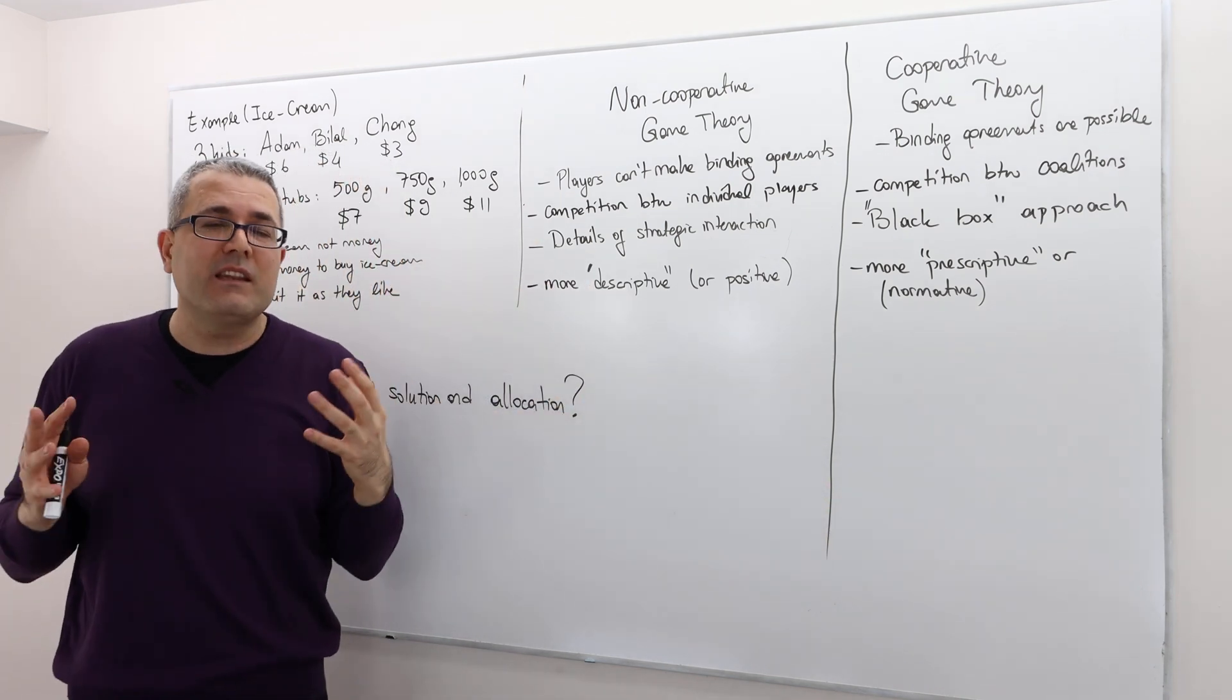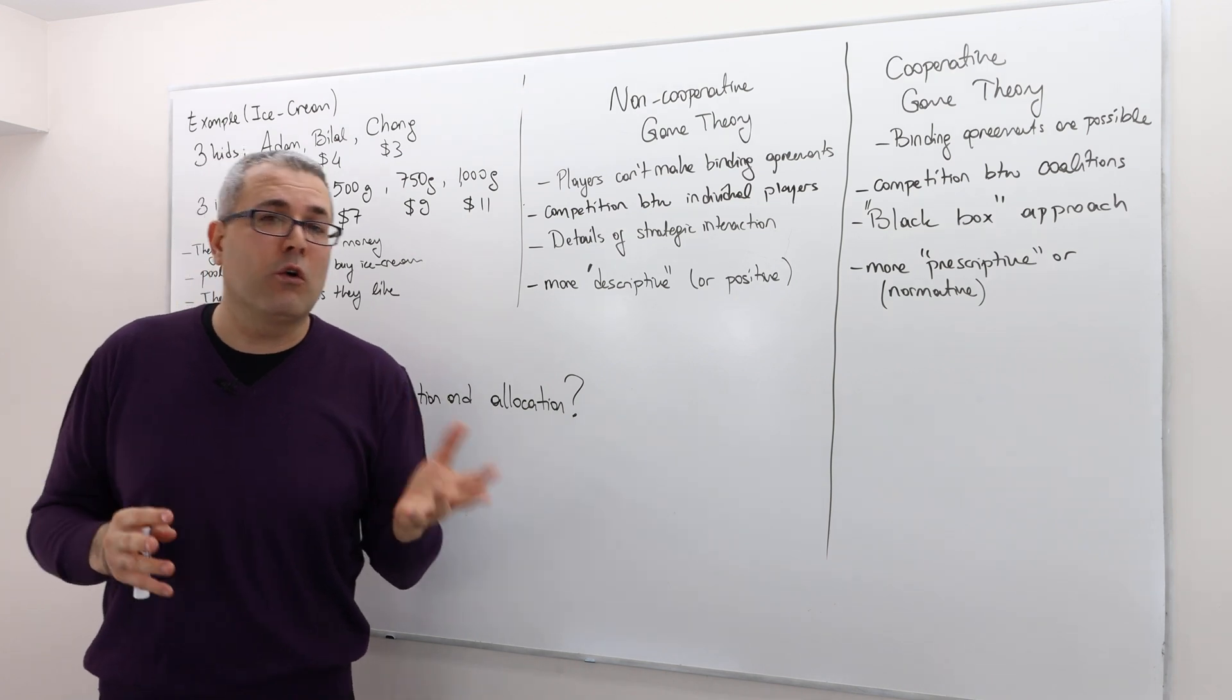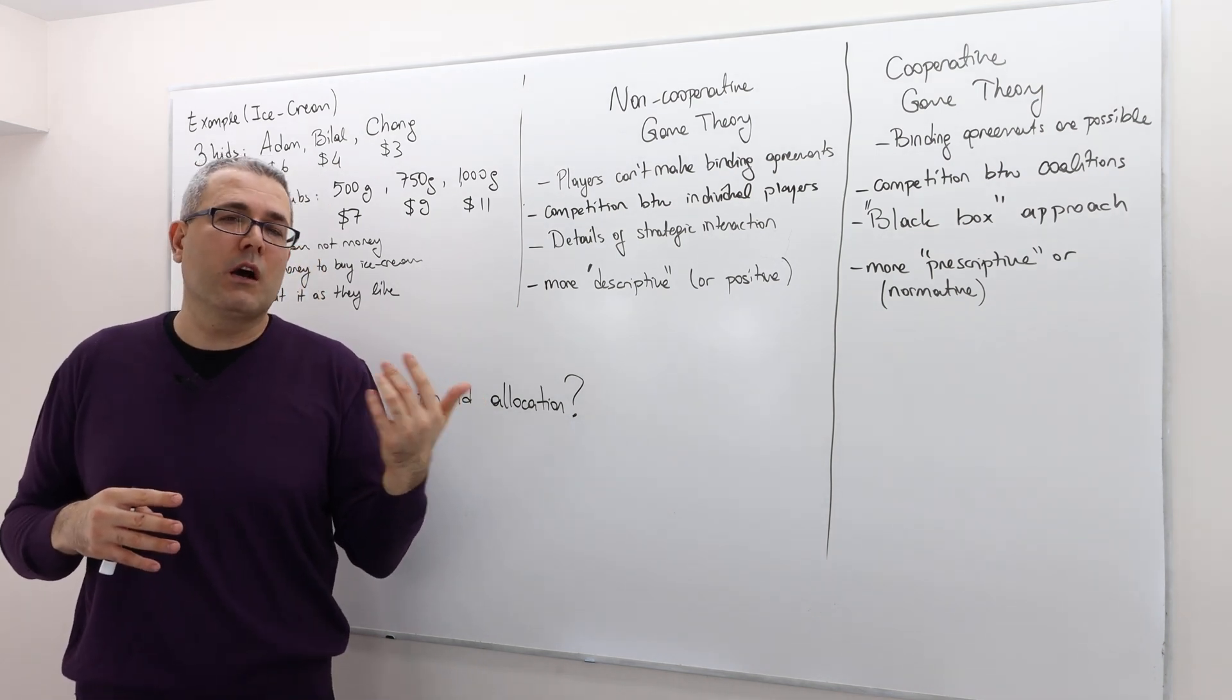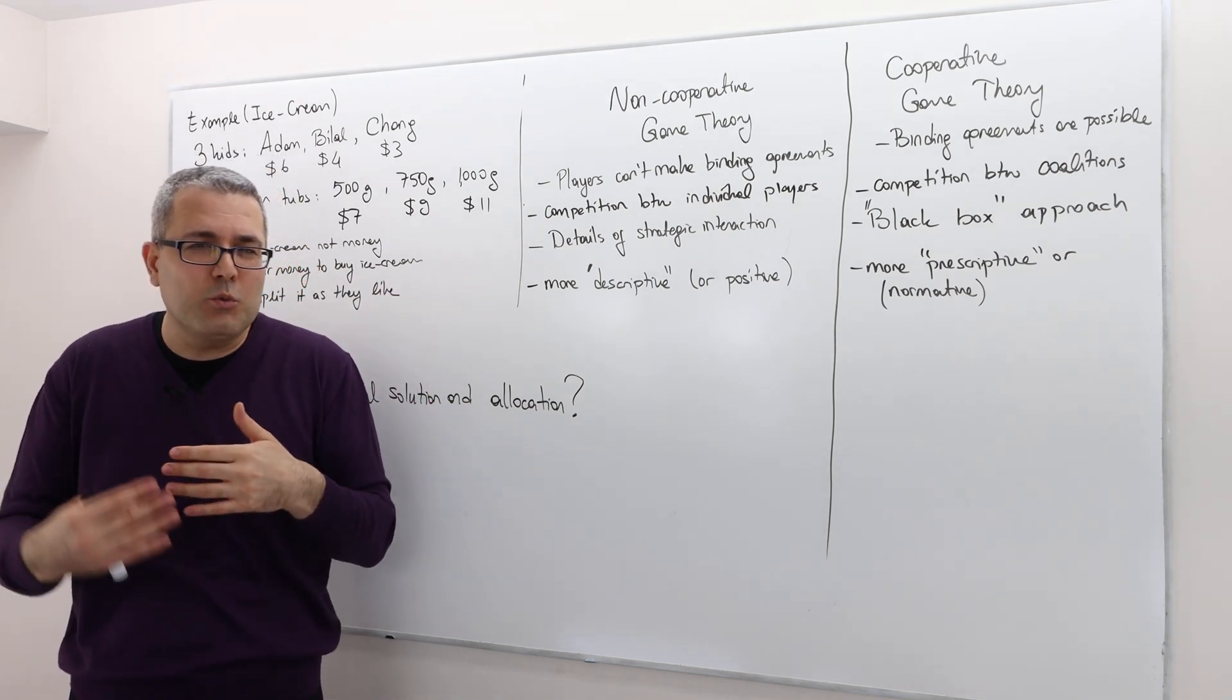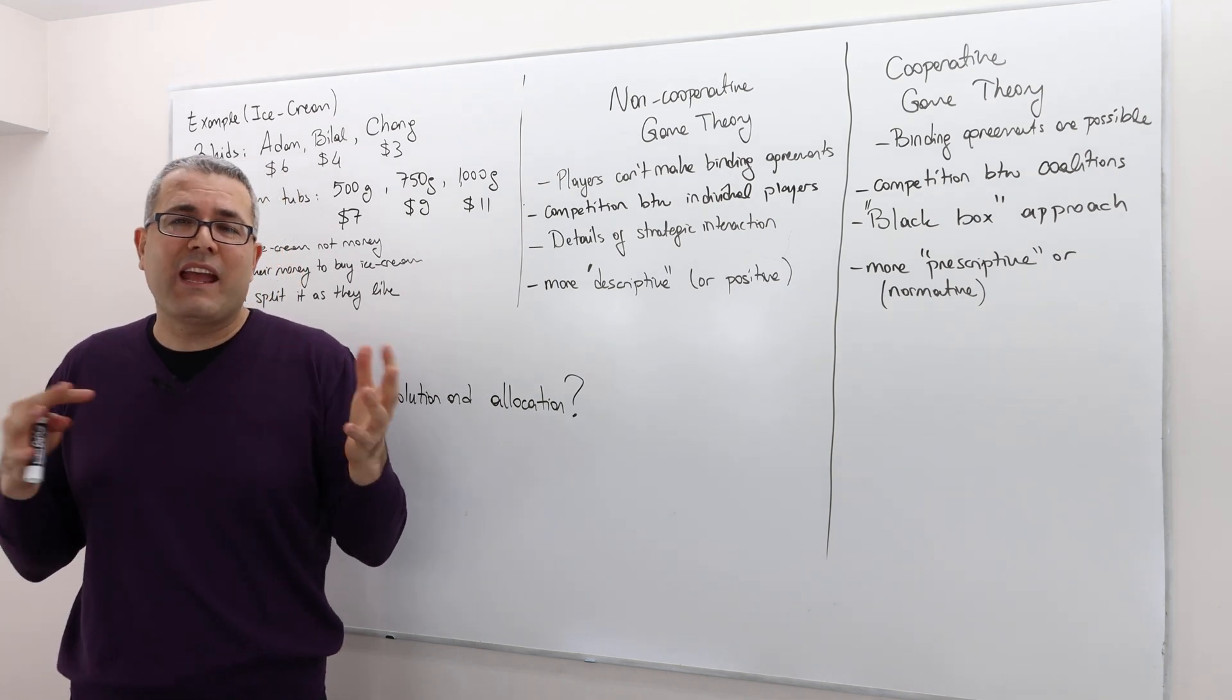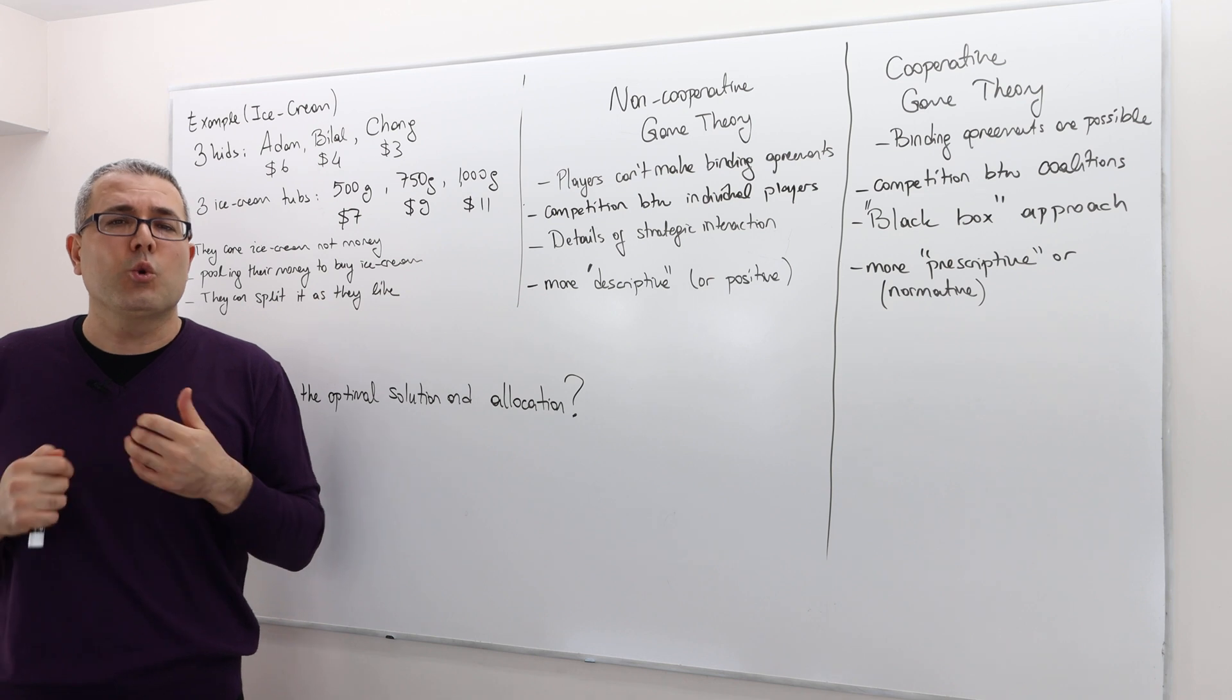But, as I said, it depends on your questions you're tackling. Maybe you want to answer questions like, what is the best initial offer? Or who should make the initial offer? If you make an initial offer, is it going to hurt you or benefit you? Or if you are going to make concessions, what should be the rate of concessions? Do you see what I mean? So if you are aiming to make such comparative static analysis and or answer questions which are related to the details of the strategic environment, then non-cooperative approach would make more sense.